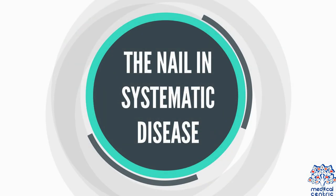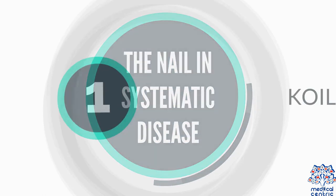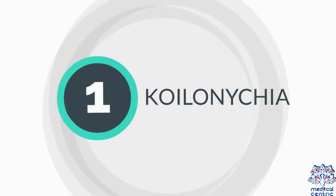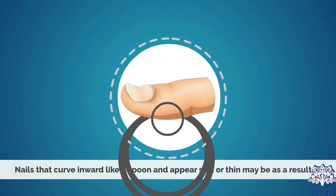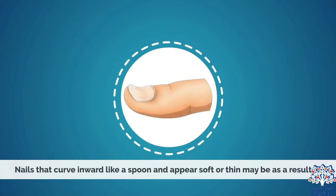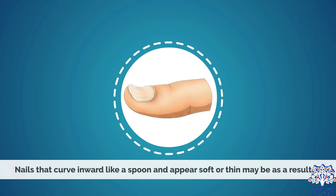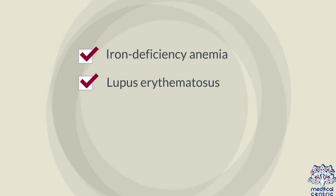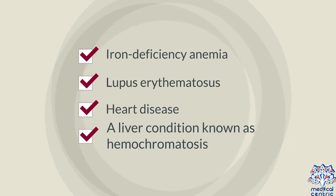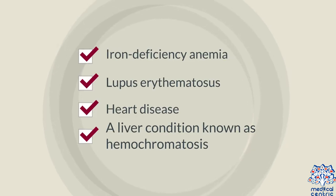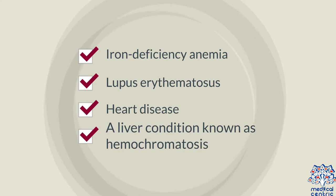The nail in systematic disease. Koilonychia: nails that curve inward like a spoon and appear soft or thin. This may be as a result of iron deficiency, anemia, lupus erythematosus, heart disease, or a liver condition known as hemochromatosis.